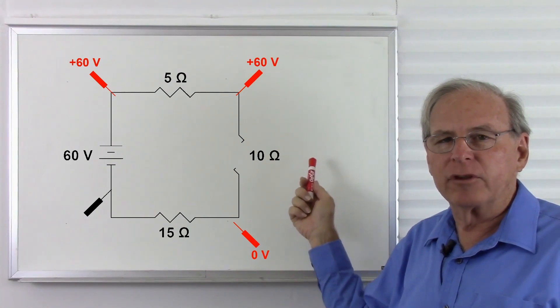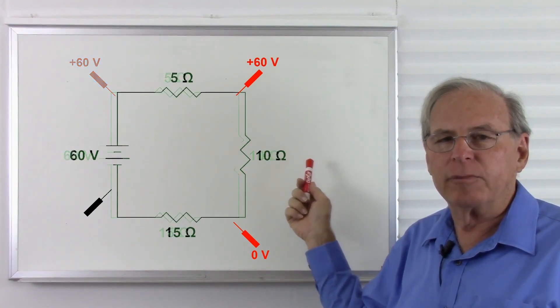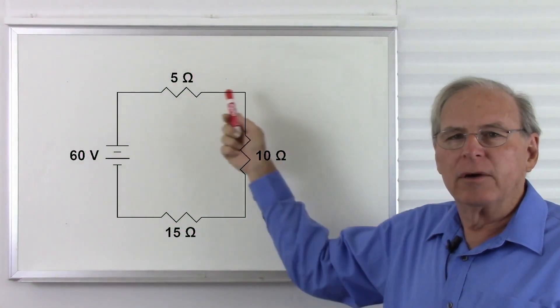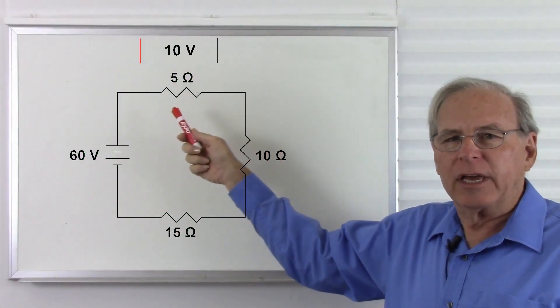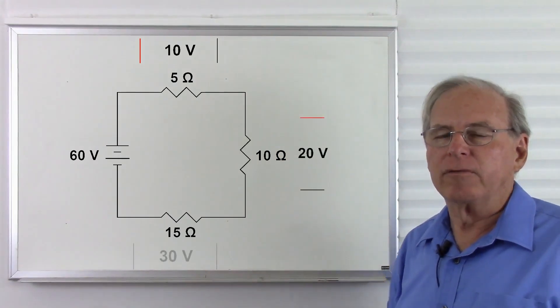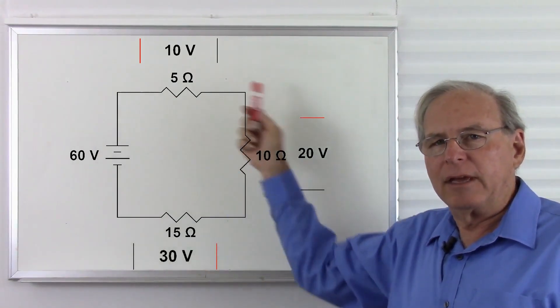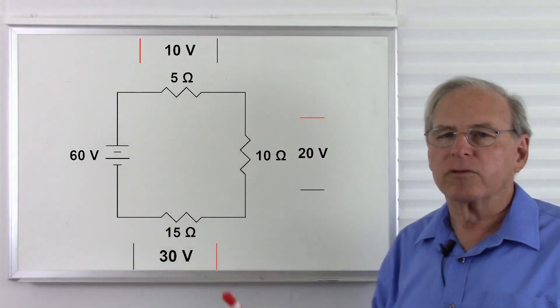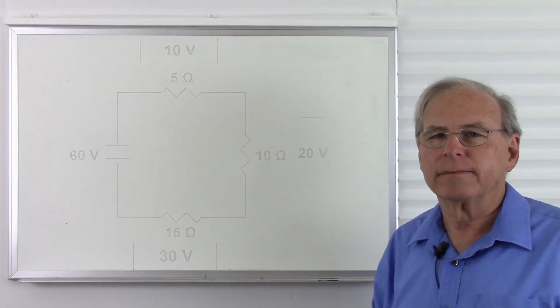I replaced that resistor, and things should be working again with, once again, 10 volts, 20 volts, and 30 volts to make the entire 60 volts around the circuit.